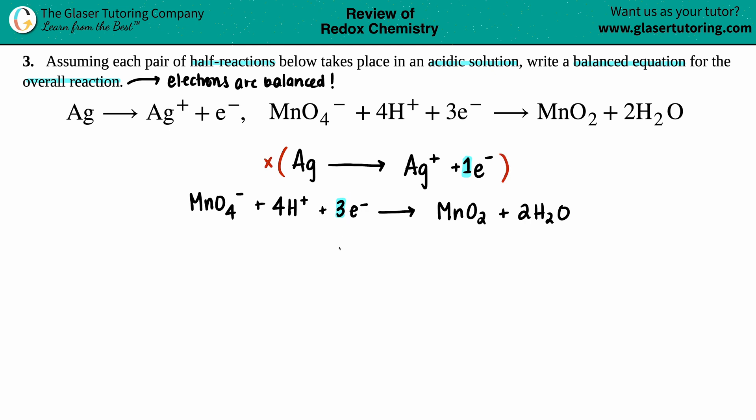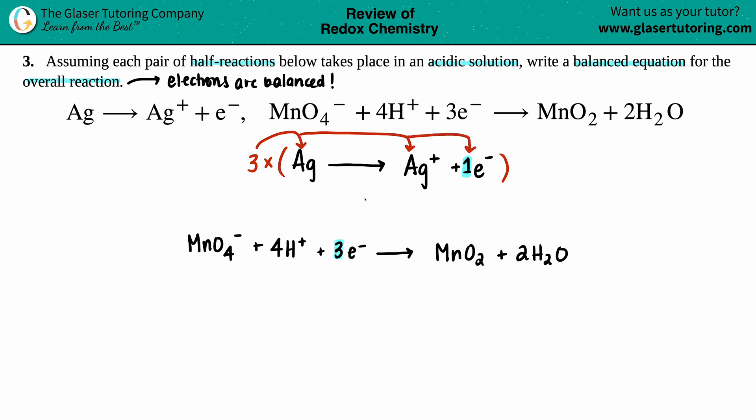Since three is larger than one, maybe I can take the first equation and times it by something so that I can get it to be the other electron number. One times what will get you three? You're absolutely correct, it's three. So I'm going to take this whole equation and times it by three. You have to times each one by that number, and it's only the coefficients that are going. So technically we only had one Ag in front of these, so one times three is now three Ag. So I have 3Ag yields 3Ag+ and then now I have three electrons.